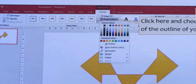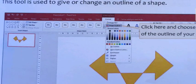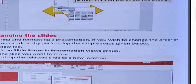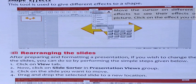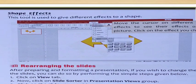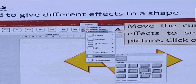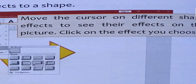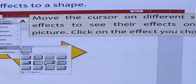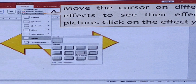Next is Shape Effects. This tool is used to give different effects to a shape. Here you can see Format tab and Shape Effects. You can move the cursor on the different effects to see the effects on the pictures. When you move your mouse over the effects, you will see them applied. You can choose as per your content and presentation.